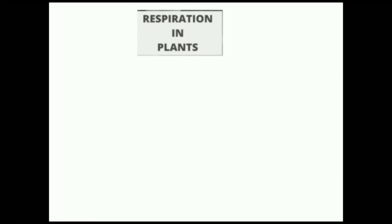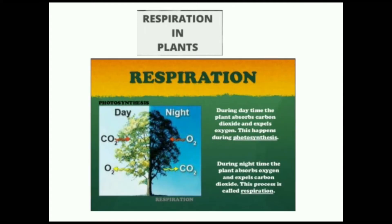Now I will explain respiration in plants. Plants are living beings. They also respire by taking in oxygen and giving out carbon dioxide. The plants don't have any organs for breathing. The exchange of oxygen and carbon dioxide takes place by diffusion through small pores called stomata. Now see the diagram — there are two processes mentioned: photosynthesis and respiration.